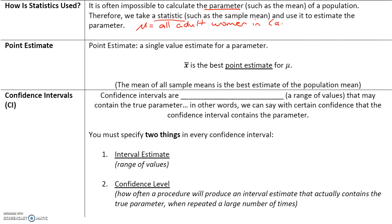How are statistics used? It is often impossible to calculate the parameter, such as the mean of a population. Therefore, we take a statistic, such as a sample mean, and use it to estimate the parameter.